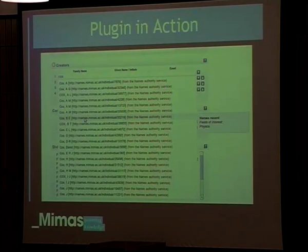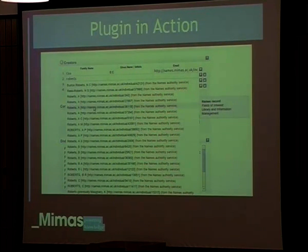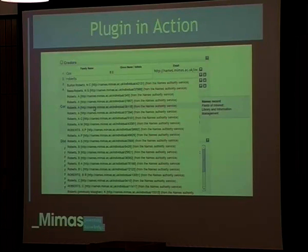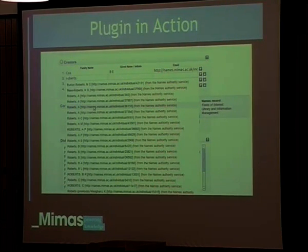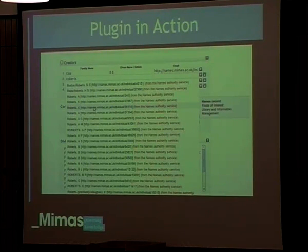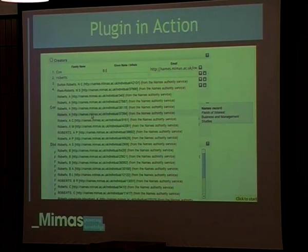One of the problems is disambiguating these different names. You can see we've got multiple Roberts A — how do we know which one's which? You mouse over and you can see on the right-hand side disambiguation information. At the moment it's just a field of interest, but we're looking at adding extra information such as articles they've written, co-authors, and maybe a homepage. So that allows you to select the correct one. Here's a different Roberts A with a different field of interest.